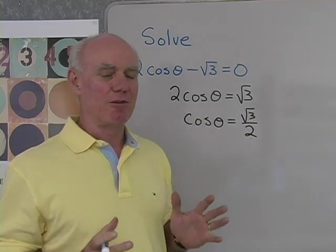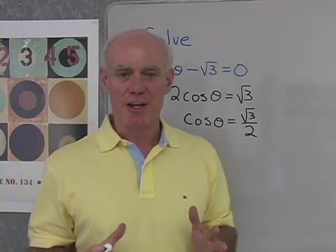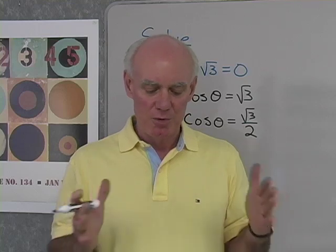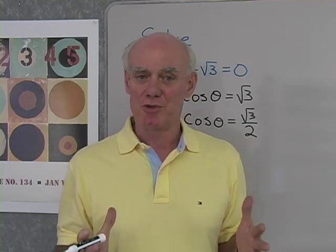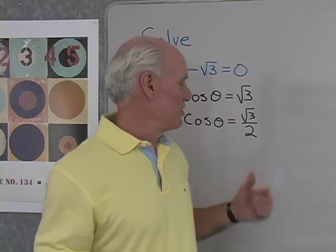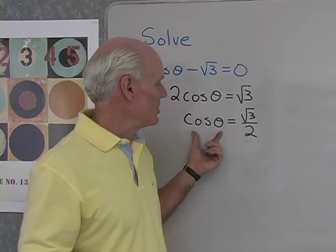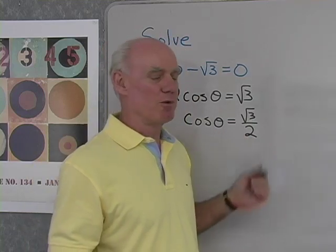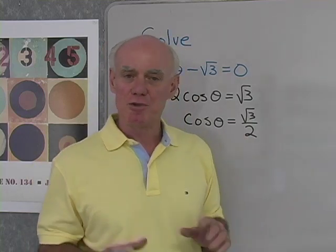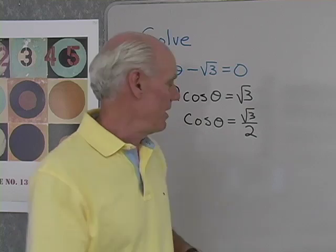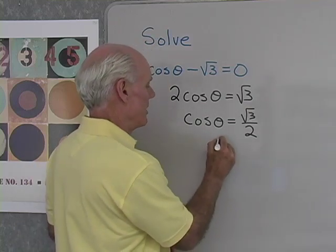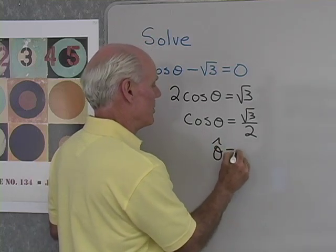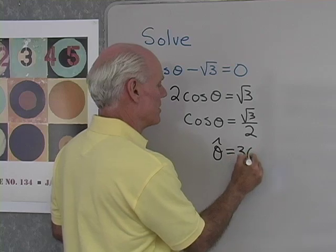I'm looking for all values of theta between 0 and 360 degrees that make this a true statement. The fact that cosine theta equals square root 3 over 2 tells me that my reference angle is going to be 30 degrees.